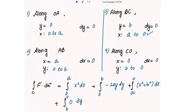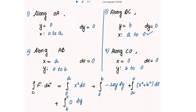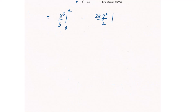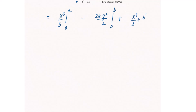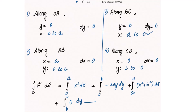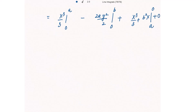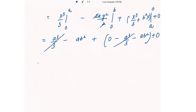Integrating: for OA we get x³/3 evaluated from 0 to a, giving a³/3. For AB we get −2a · y²/2 from 0 to b, giving −ab². For BC we get (x³/3 + b²x) from a to 0, giving −a³/3 − ab². CO contributes 0. Adding all: a³/3 − ab² − a³/3 − ab² equals −2ab². This is the required solution.